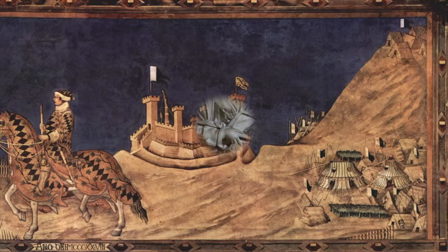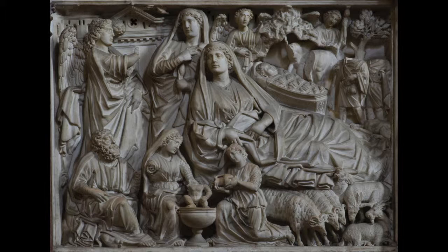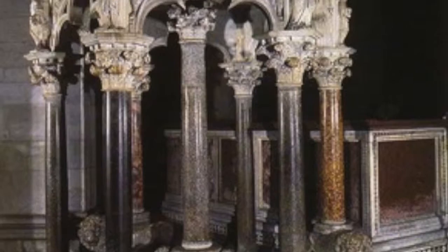The second artwork is called the Annunciation, Nativity, and Adoration of the Shepherds by Nicola Pisano in Pisa, Italy, from 1259 to 1260, within the Gothic art period. This marble relief is located in the Pisa Baptistry and depicted on the dome of the pulpit.